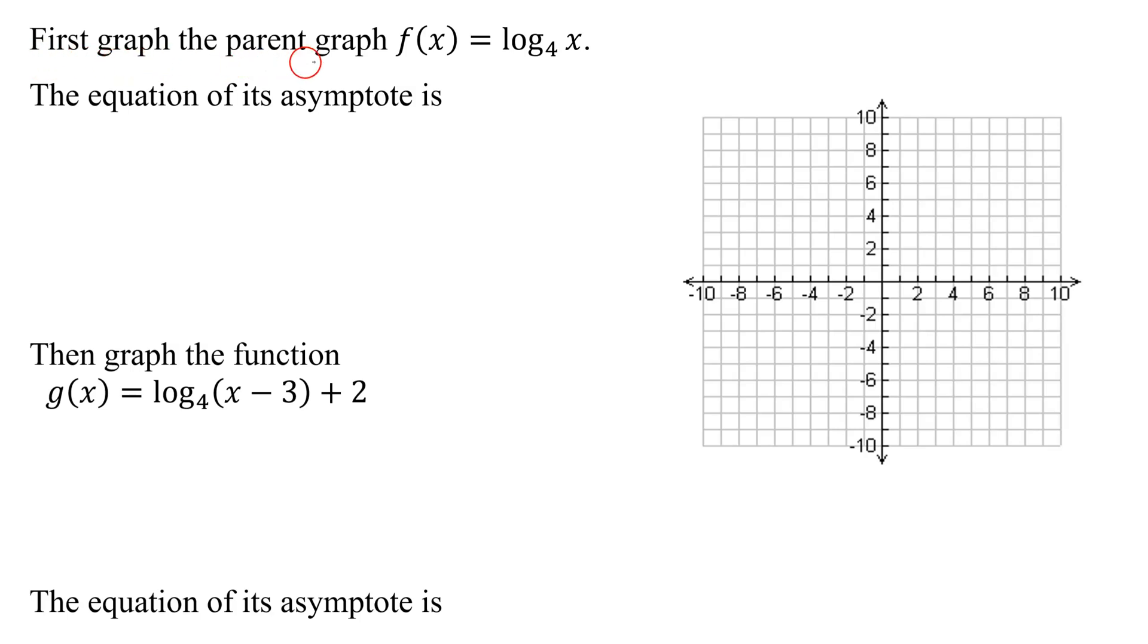In this problem, we need to first graph the parent graph f(x) = log₄(x) and find the equation of its asymptote. Then we need to graph the function g(x) = log₄(x - 3) + 2 and find the equation of its asymptote.